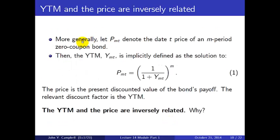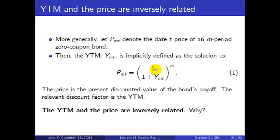More generally, if P_MT is the price at date T of an M-period zero coupon bond, then the yield Y_MT is implicitly defined as the solution to equation 1: the price equals 1 over (1+Y) to the power M. We're discounting the face value over M periods using this yield. Whatever number does the trick is called the yield to maturity.